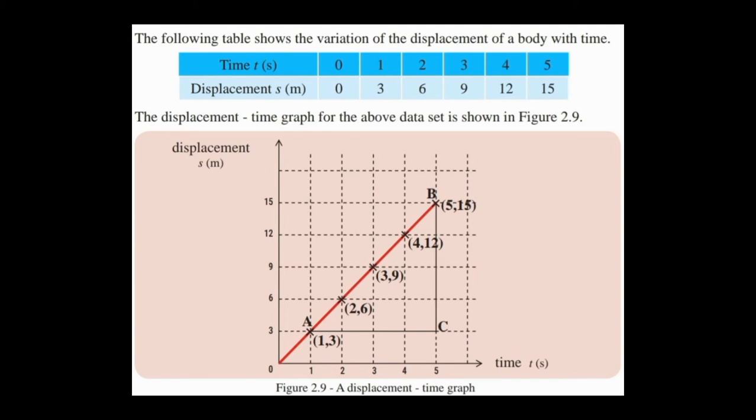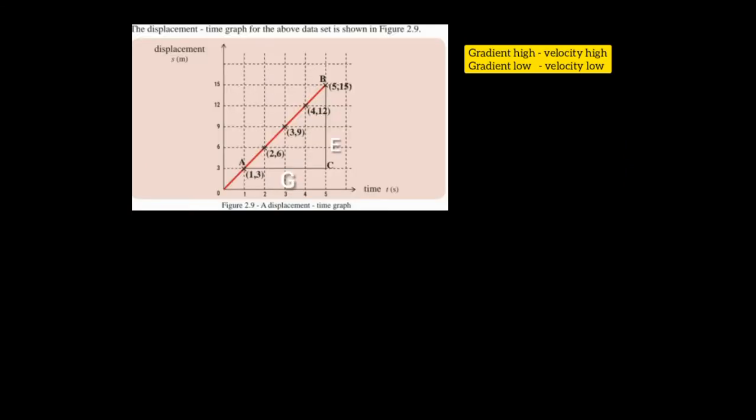Now let's move to the next main thing. From this graph, we can get the velocity. The velocity of the motion is equal to the gradient of the graph. Higher the gradient, higher the velocity. Lower the gradient, lower the velocity.